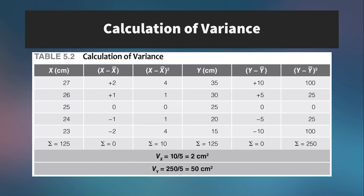So here's how we do that. Instead of taking the absolute values of the deviations, we take the square of the deviations. So here is a column showing the square of the deviations from X, and then the square of the deviations from Y. And so now we see that when we sum those up, we get 10 and we get 250.